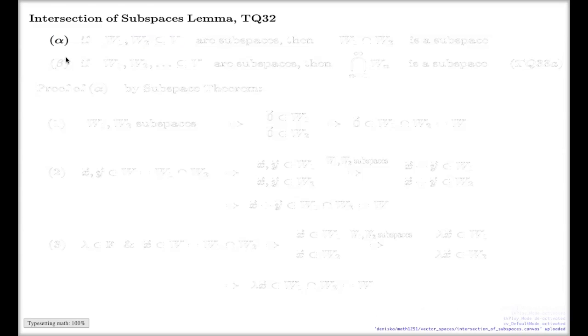Again, there will be two parts. I use Greek letters for naming the parts because indexing 1, 2, 3, I just reserved them today for criteria from the subspace theorem. We're going to use this theorem very often today.